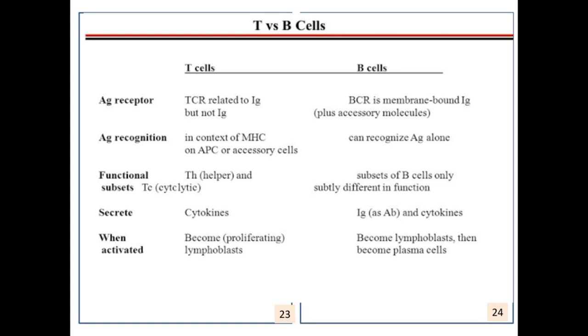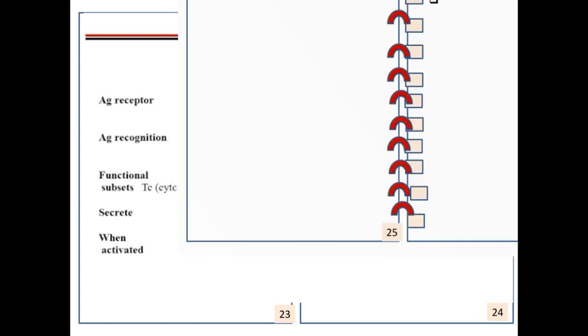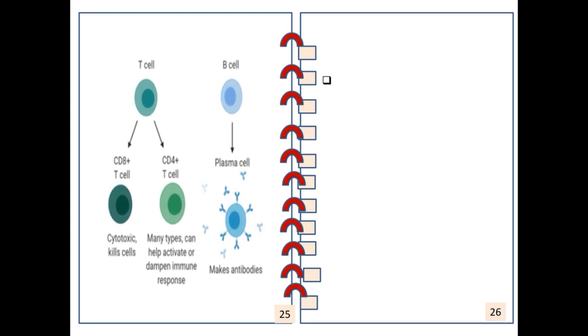You can see here the chart showing the difference between T cells and B cells. The functional subsets of T cells are helper cells and cytotoxic cells. T cells secrete cytokines and B cells secrete immunoglobulins and cytokines. T cells produce CD8 and CD4 T cells. CD8 cells are cytotoxic in activity. CD4 cells produce many types and can help activate the immune system response. B cells produce plasma cells which make antibodies.